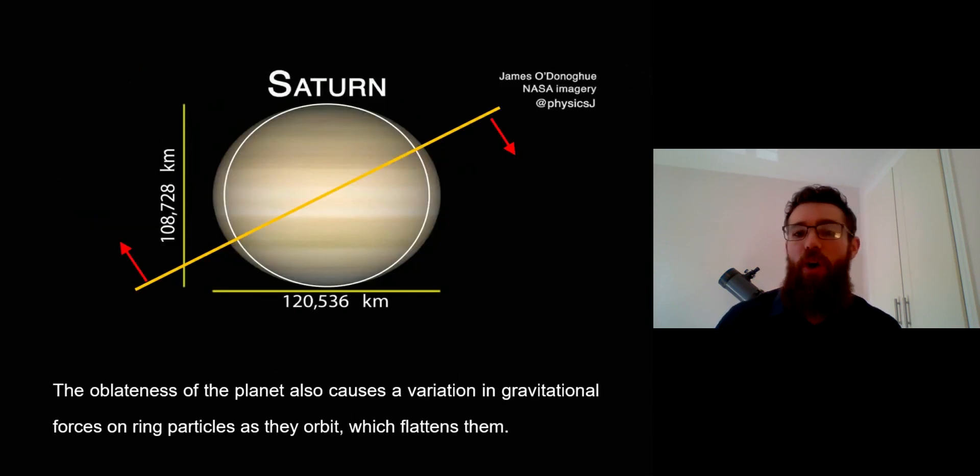One final reason why they're also very flat - as well as having collisions as they pass through the ring twice every orbit - is the shape of the planet that is also going to basically want to make them flat. Because if they're moving out of plane the gravitational force acting on them is not the same as when they're orbiting around the equator. We refer to that non-spherical shape of the planet as the oblateness of the planet.